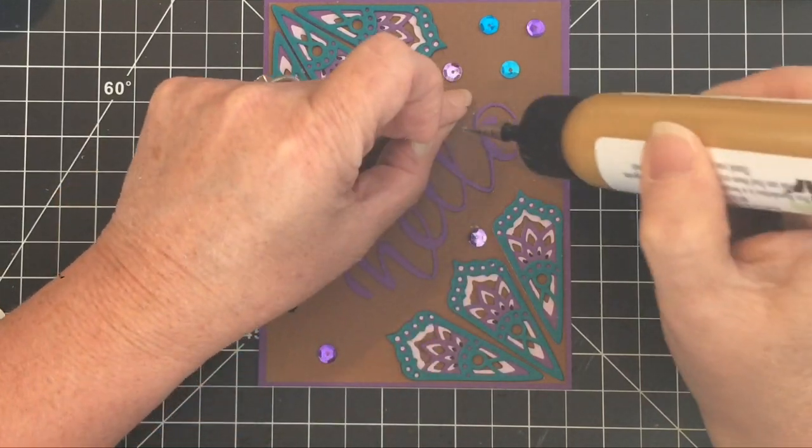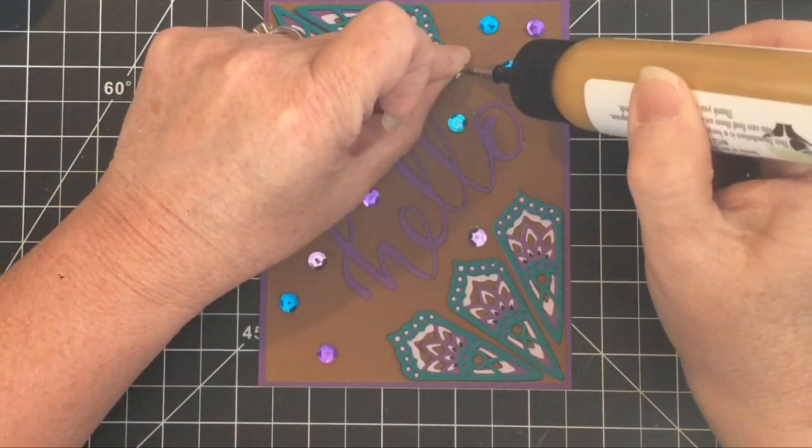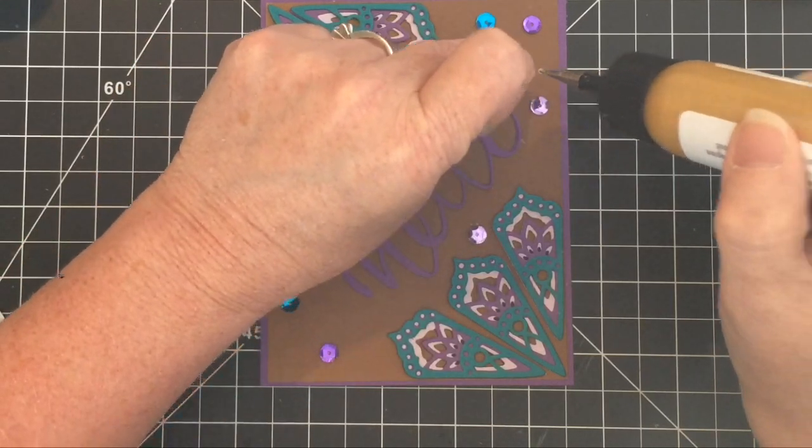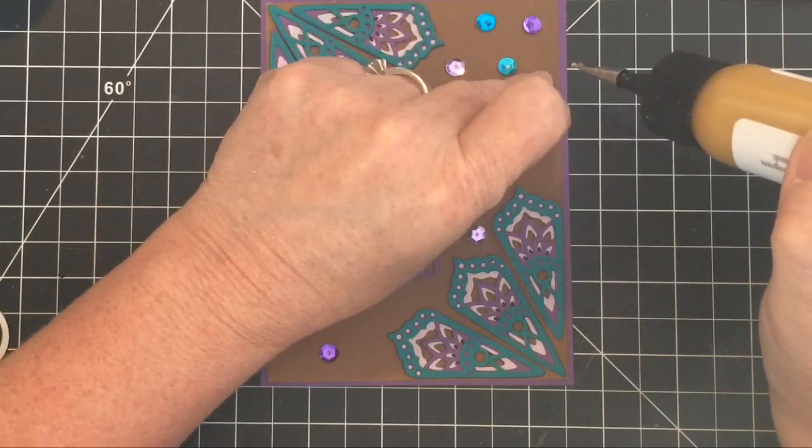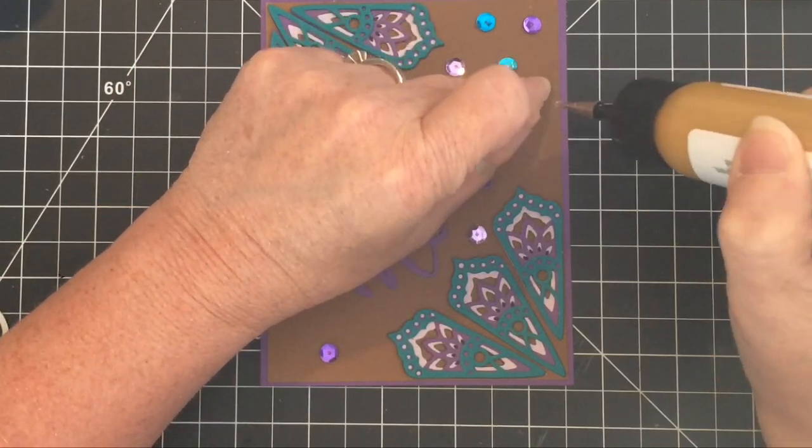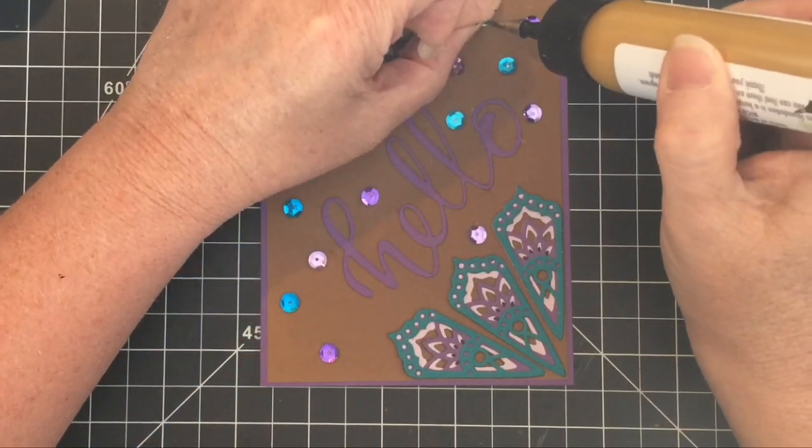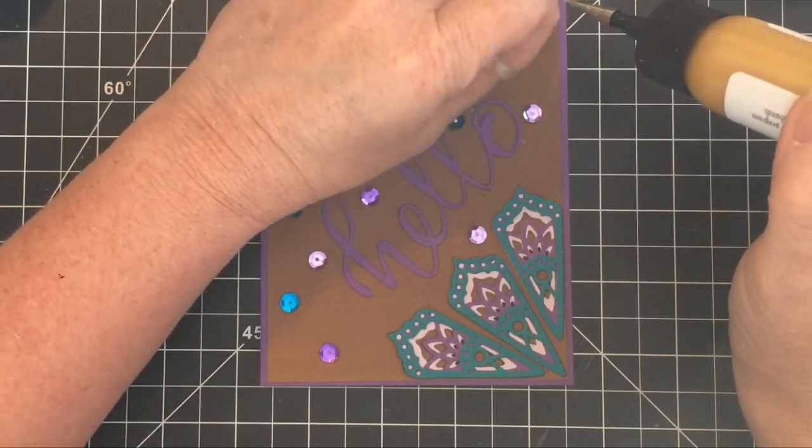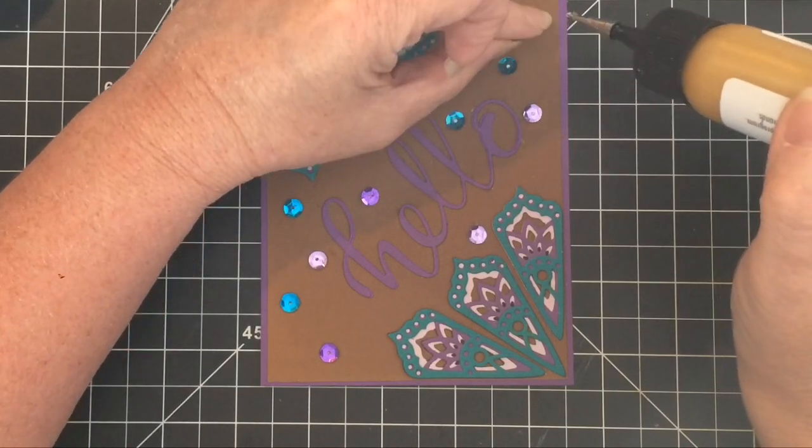So you'll see I put quite a few sequins on this. I went a little overboard. But even after I finished recording this part, I ended up putting a few more. So in the final pictures, you'll notice I added probably two or three more sequins to this one. But I just love the sparkle and shine that it shows.